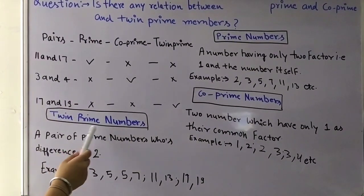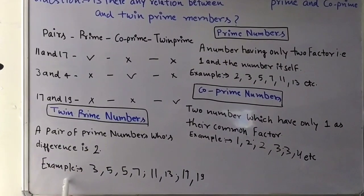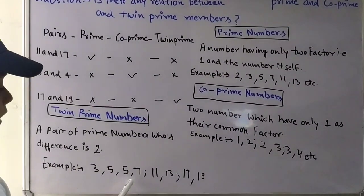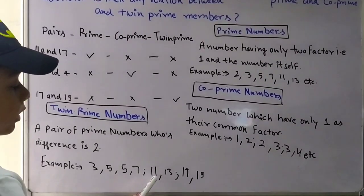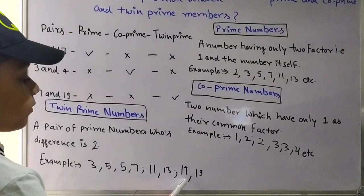Twin prime numbers: a pair of prime numbers whose difference is 2. Example: 3, 5, 5, 7, 11, 13, 17 and 19.